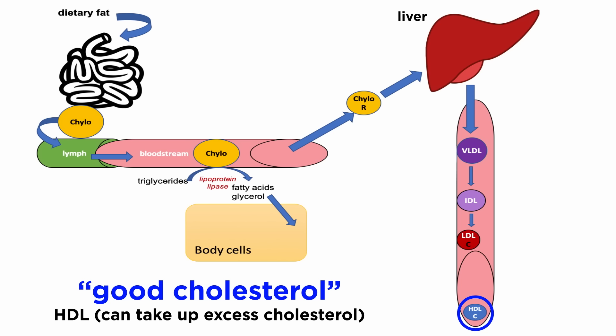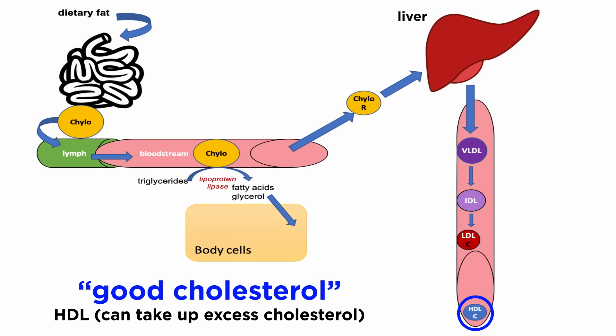HDL is the lipoprotein with the highest proportion of protein and lowest proportion of lipid, and it is sometimes referred to as "good cholesterol." This is primarily because it is able to take up cholesterol and lipid from the sites where it accumulates in blood vessels and transport the cholesterol back to the liver where it is degraded. Through this mechanism, it can limit the deposition of cholesterol and lipid from the lower-density lipoproteins and reduce the risk of atherosclerosis.